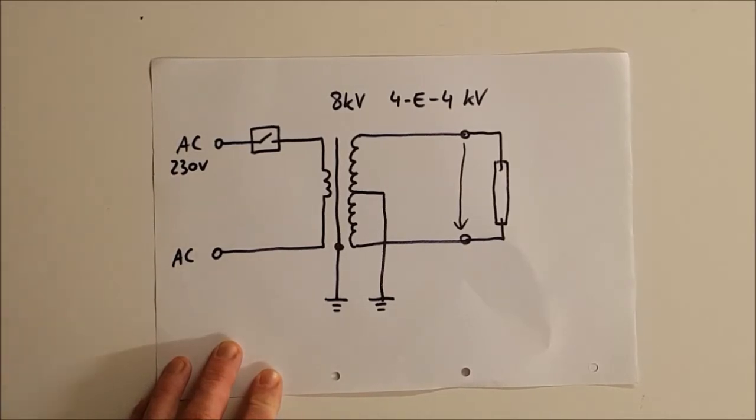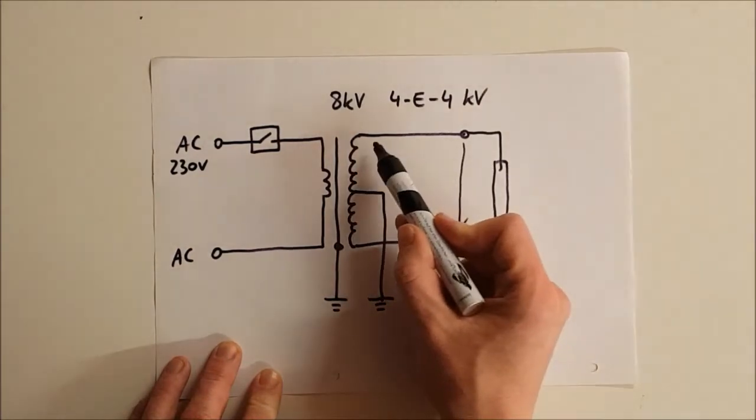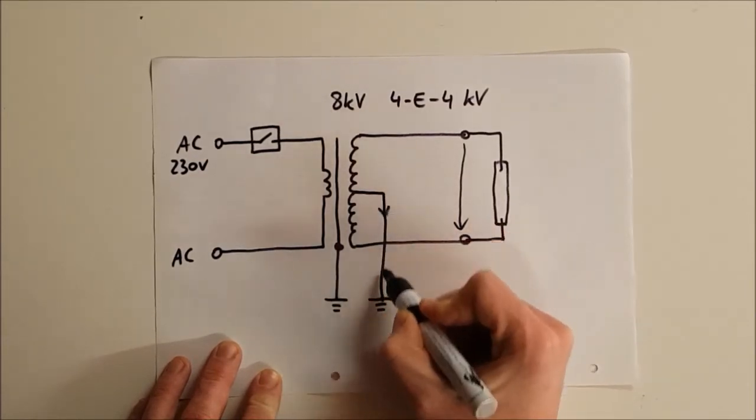So now in normal operation, this transformer output will be loaded symmetrically and there will be no current flowing in this conductor here. No current in here.